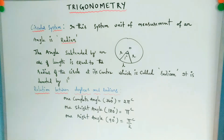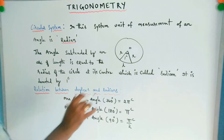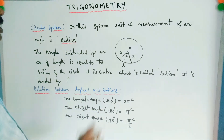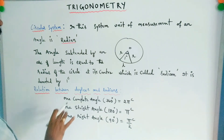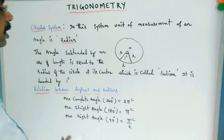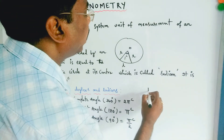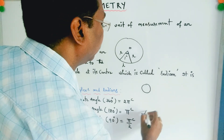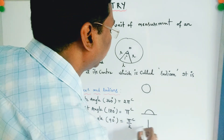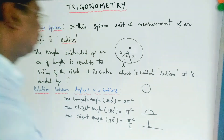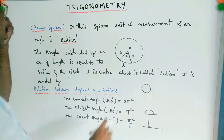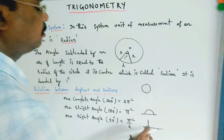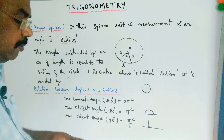Relation between degrees and radians: one complete angle equals 360 degrees, which equals 2π radians. One straight angle equals 180 degrees, which equals π radians. One right angle equals 90 degrees, which equals π/2 radians.